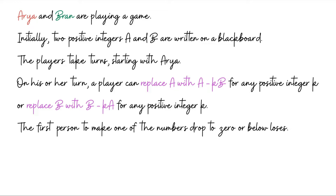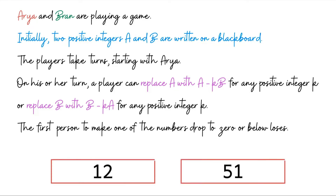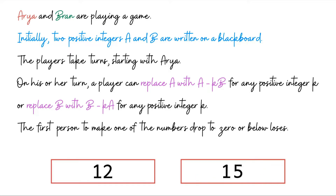Now the situation is much more interesting — it's not obvious at all who will win given a pair of numbers. Let's get a feel for this through examples. Say the two numbers are 12 and 51. Boxes are color-coded: red for Arya's turn, green for Bran's turn. Arya makes her first move by subtracting three copies of 12 from 51, leaving 15.